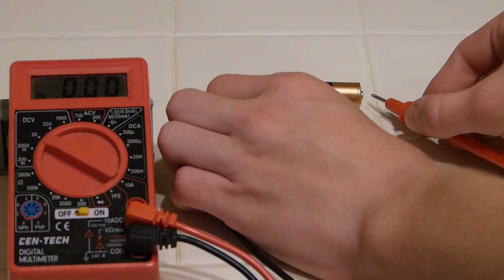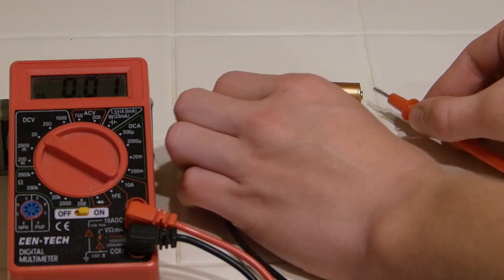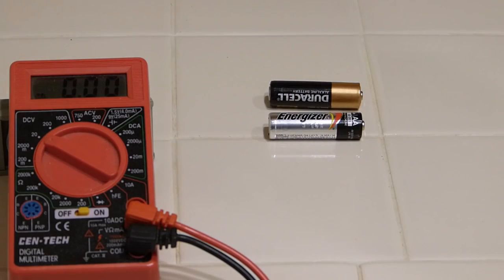The Duracell is showing 1.2 and as soon as it gets any load on it, it goes less than that. Believe me, it's beat.